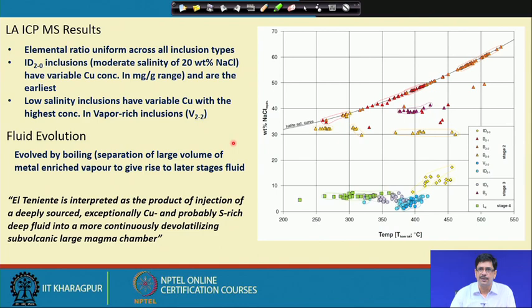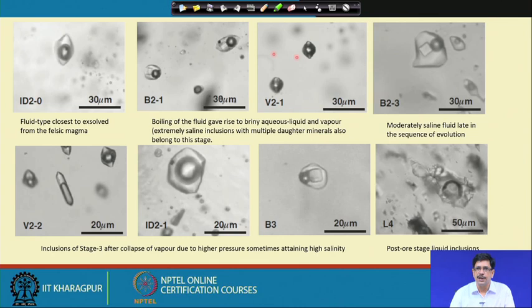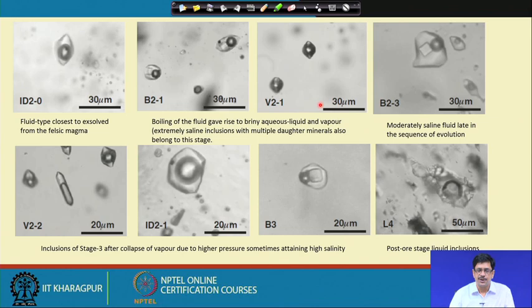In older literature, without measurements of elemental concentrations from individual inclusions, interpretations were mostly based on temperature-salinity distributions. Now, correlations can be made between inclusion types, LA-ICP-MS concentration data, and the interpretation of fluid evolution in the porphyry system.